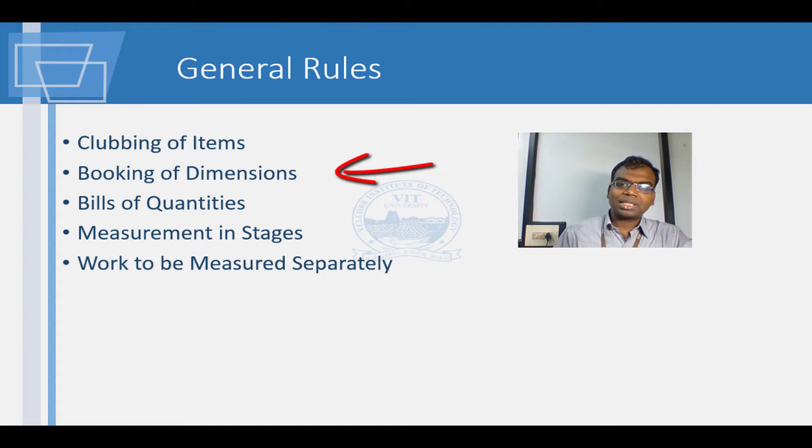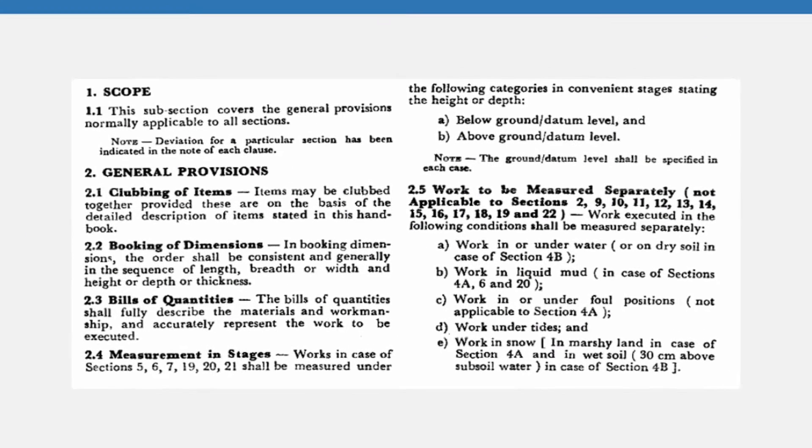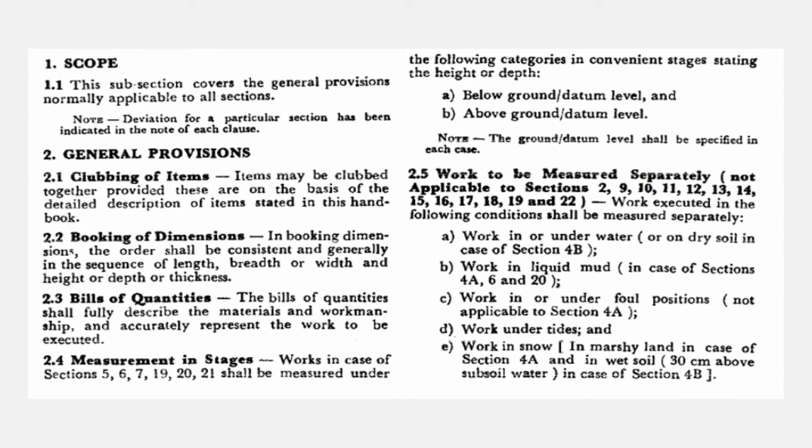In booking of dimensions, the order shall be in sequence. This shall be seen on a BOQ sheet. Work shall also be measured in convenient stages. A screenshot of the provisions is shown here. Clause 2.3 lists the section where the provision mentioned earlier will not be applicable. When work is executed under specific conditions mentioned in this clause, they shall be measured separately.